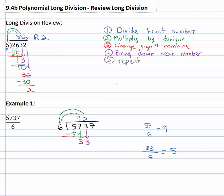We then multiply the five by the six, we get thirty and we change the sign on thirty and combine, getting a three again.